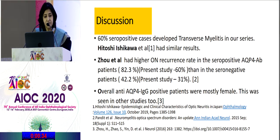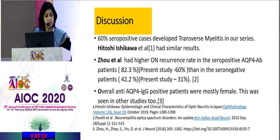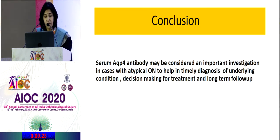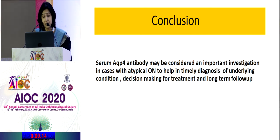60% of seropositive cases developed transverse myelitis in our series, similar to the Japanese study. Overall, anti-aquaporin-4 IgG-positive patients were mostly female, as seen in other studies too. To conclude, serum aquaporin-4 antibody may be considered an important investigation in cases with atypical optic neuritis to help in timely diagnosis of the underlying condition, decision-making for treatment, and long-term management.